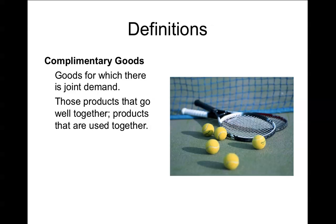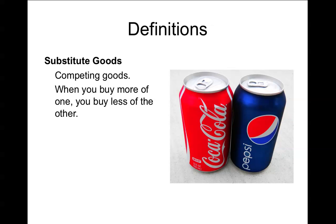Complementary goods are goods for which there is joint demand — products that go well together and are used together. A good example would be tennis balls and tennis rackets: if you buy one, you're likely to buy the other. Substitute goods are competing goods — when you buy more of one, you buy less of the other. For example, Coke and Pepsi: if you buy more Coke, you won't buy Pepsi. We'll assume there's no real difference between them, even though that is debatable.